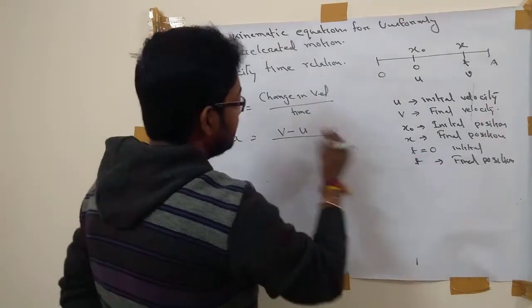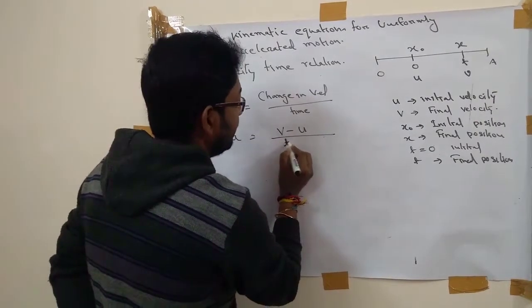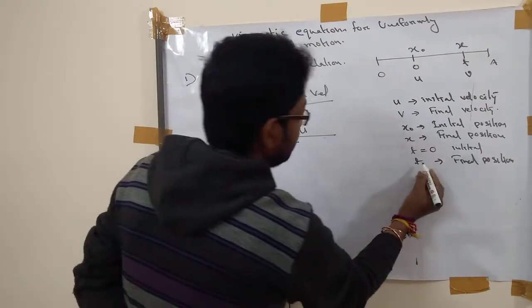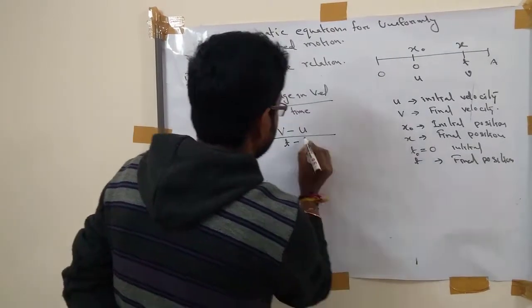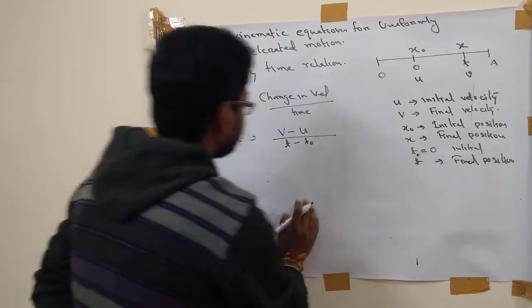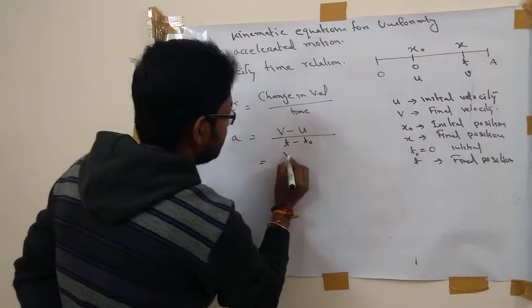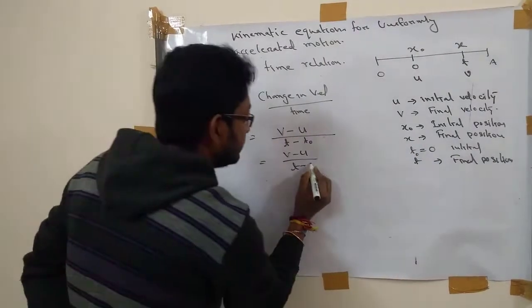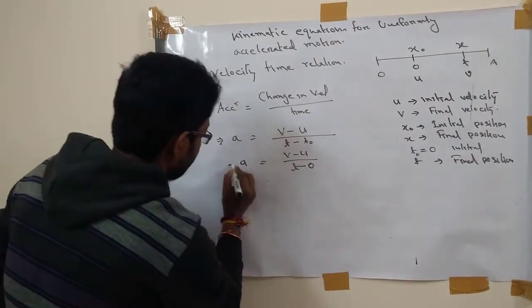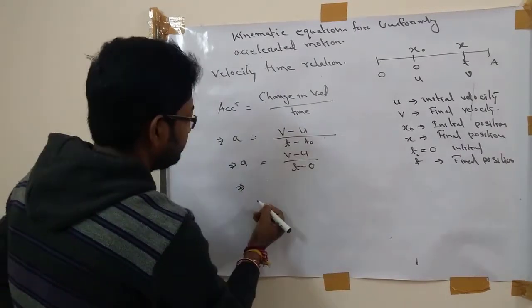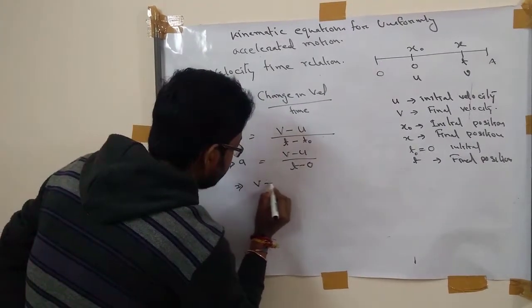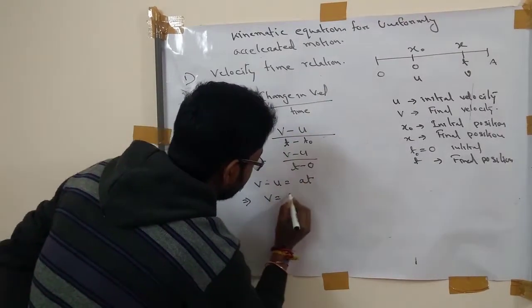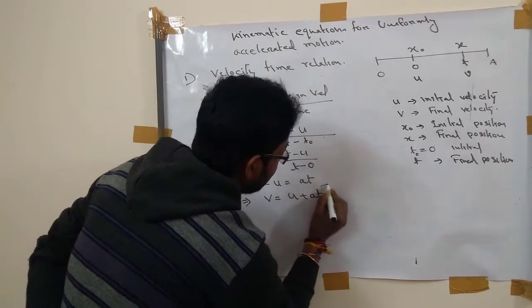The time is final time minus initial time T0. Since the initial time T0 is equal to 0, we can write V minus U equal to A times T.